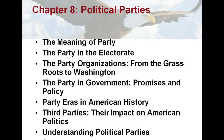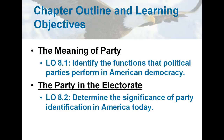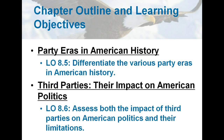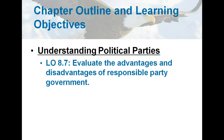Some of our goals today in this lecture: we are going to identify the functions that political parties perform in American democracy, determine the significance of party identification in America today, describe how political parties are organized in the United States, evaluate how well political parties generally do in carrying out their promises, differentiate the various party eras in American history, assess both the impact of third parties on American politics and their limitations, and evaluate the advantages and disadvantages of responsible party government.